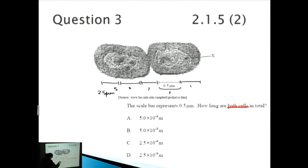How long are both cells in total? We know it's 0.5 micrometers, which is the length of one bar, times by five, therefore it's 2.5 micrometers. But unfortunately if we look at A, B, C, and D, there are one million micrometers in one meter, or 10 to the power of 6 micrometers equals one meter.